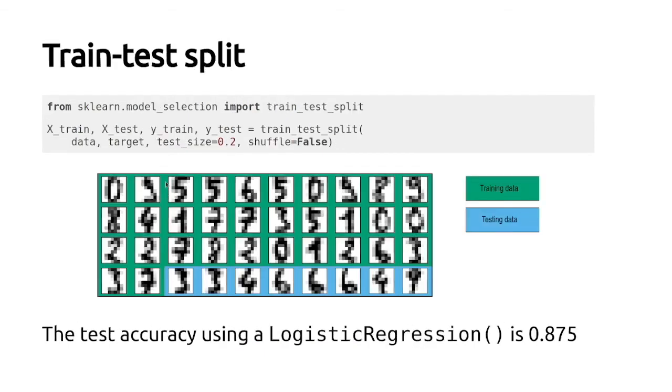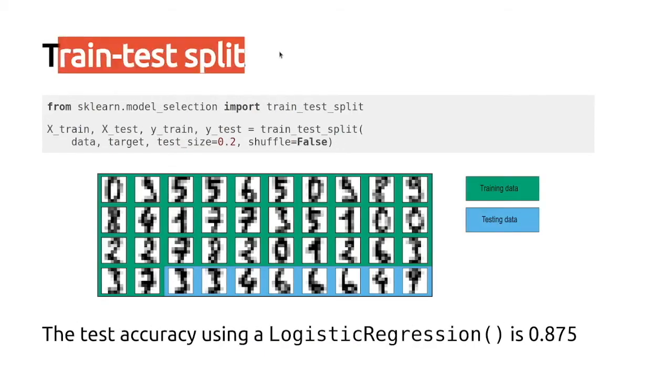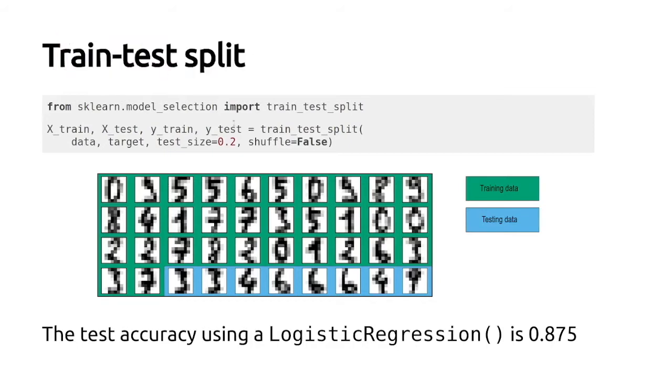One way to simulate new data is by means of a train test split. This snippet of code here shows the syntax in scikit-learn on how to do such a split, and you can provide the test size explicitly. For instance, here the 0.2 means that we are using 20% of the data for testing. We can also set shuffle equals to false, meaning that in this case it's the last 20% of the data that will be set for testing.